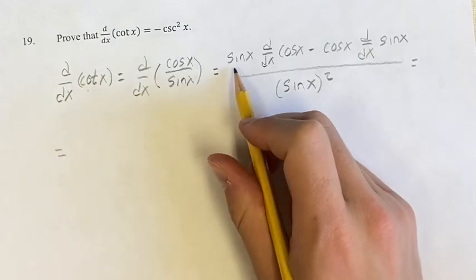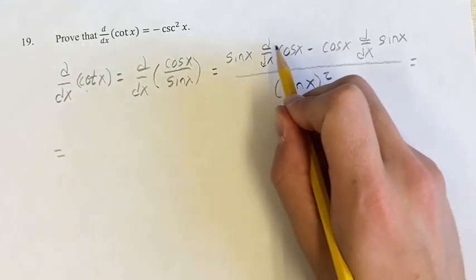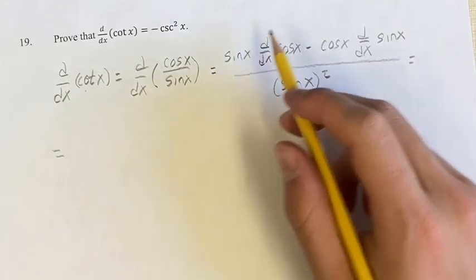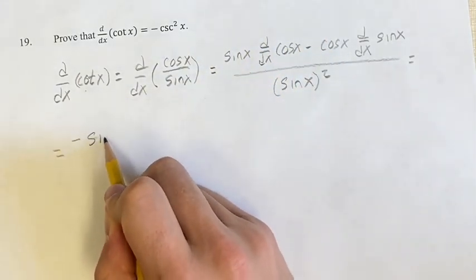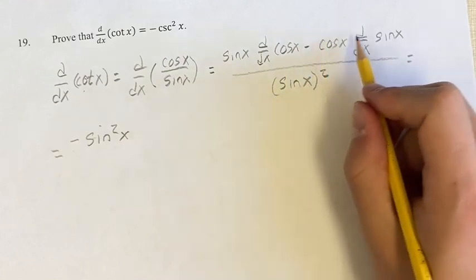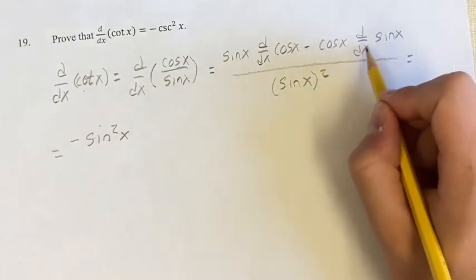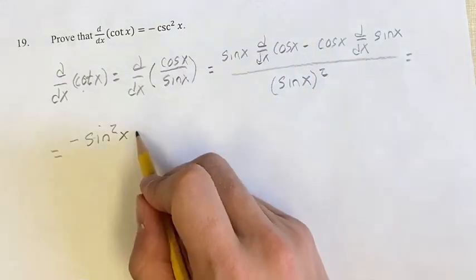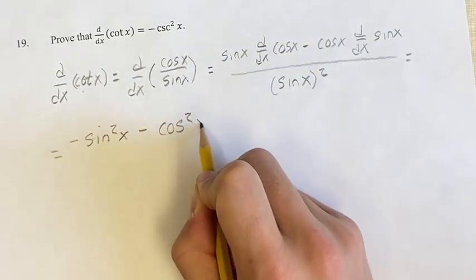So we have sine x times the derivative of cosine x. The derivative of cosine x is negative sine x, so we have sine x times negative sine x, which is negative sine squared x. Then minus cosine x times the derivative of sine x. The derivative of sine x is cosine, so we have cosine times cosine, which is minus cosine squared x.